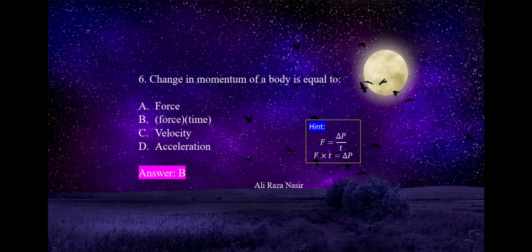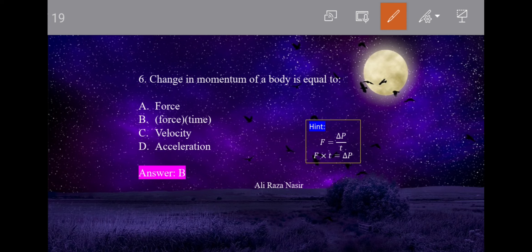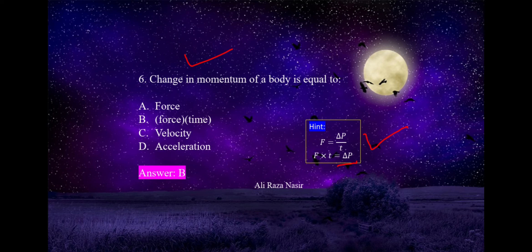Sixth MCQ: change in momentum of a body is equal to — we know that force F equals the rate of change of momentum, meaning change in momentum divided by time. So change in momentum equals force times time. Option B is correct: force times time (impulse).